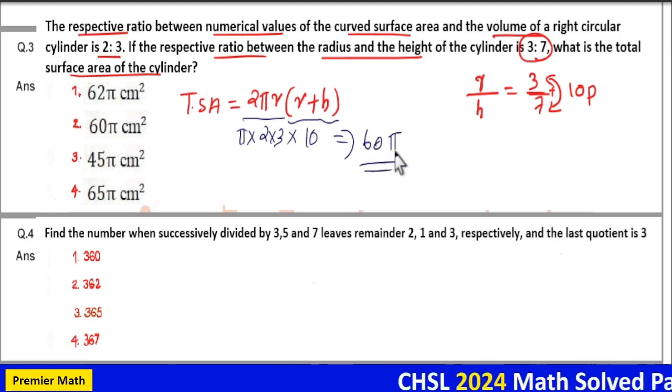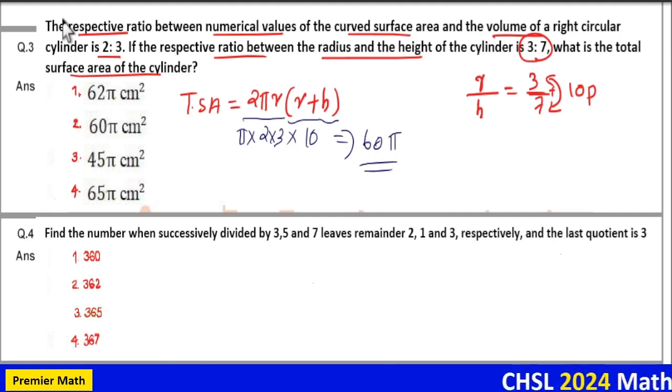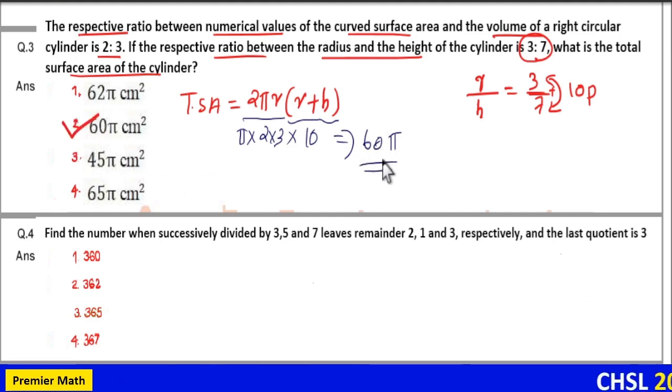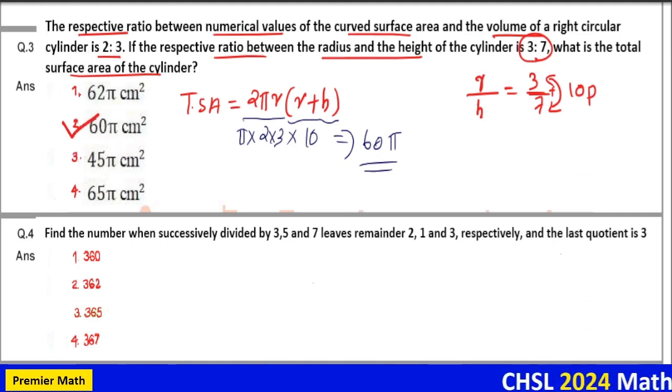So, this is 60π or a multiple of 60π. Now, if you look at the options, you can see 60π is in the options. So, we can choose 60π as our answer.